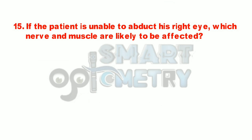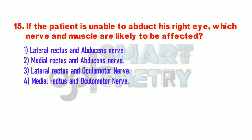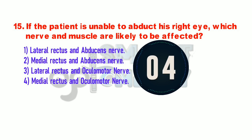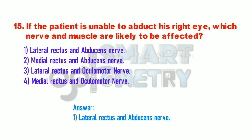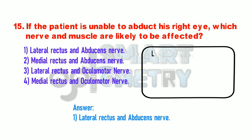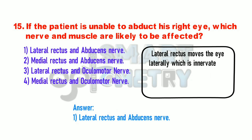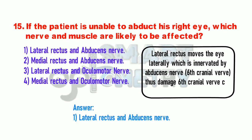Q15. If the patient is unable to abduct his right eye, which nerve and muscle are likely to be affected? 1. Lateral rectus and abducens nerve. 2. Medial rectus and abducens nerve. 3. Lateral rectus and oculomotor nerve. 4. Medial rectus and oculomotor nerve. Lateral rectus moves the eye laterally, which is innervated by the abducens nerve, the 6th cranial nerve. Thus, damage to the 6th cranial nerve can result in lateral rectus palsy.